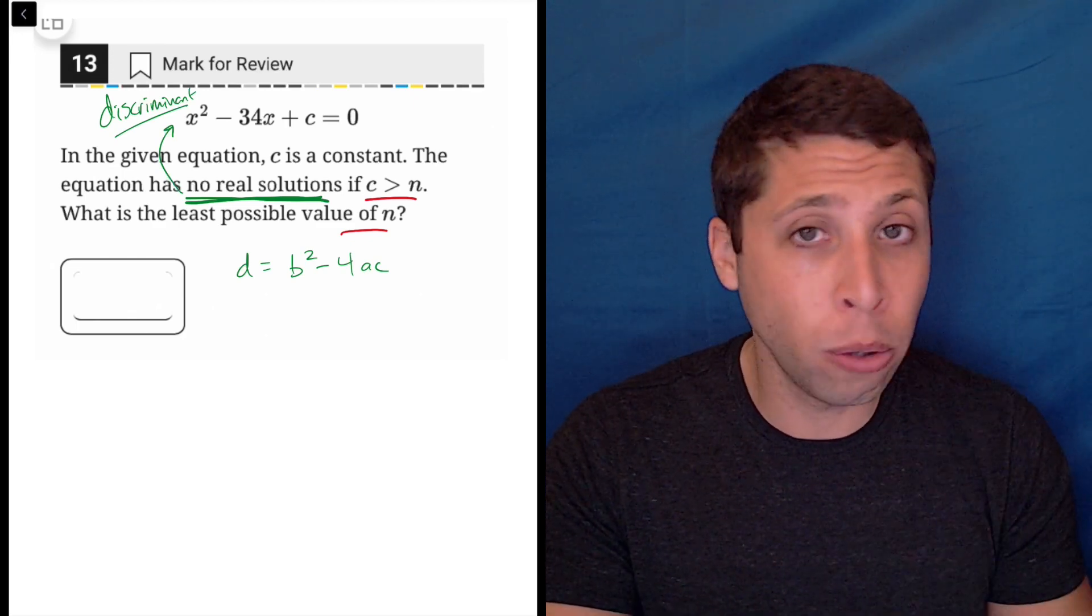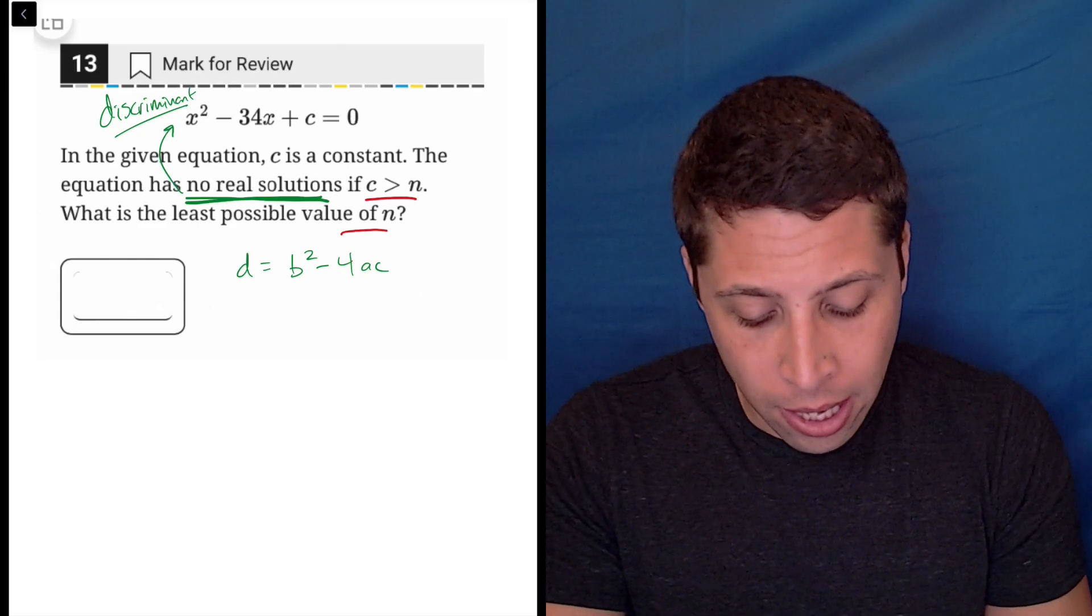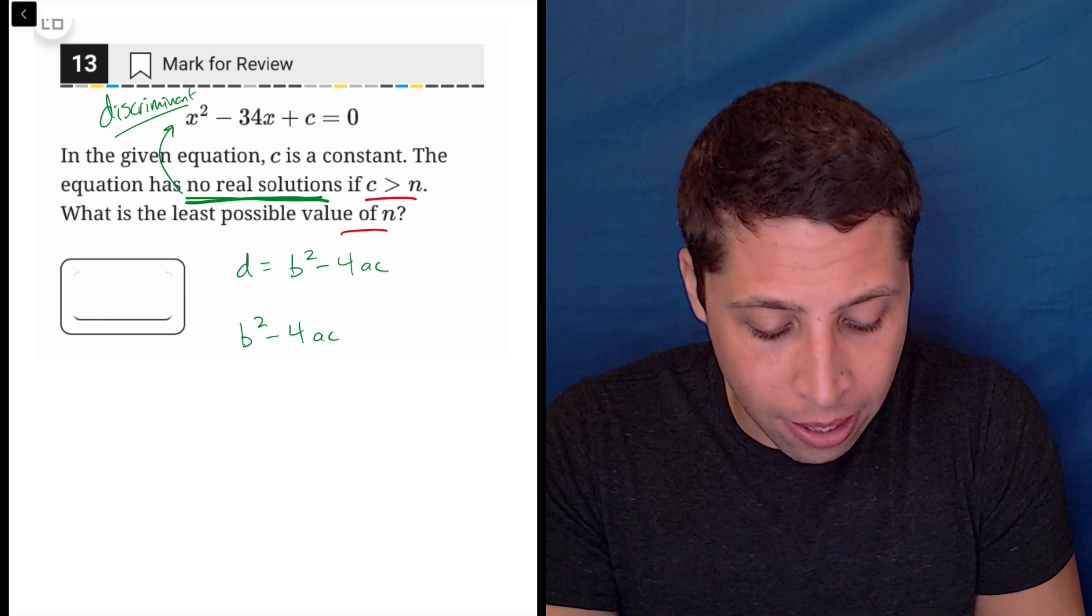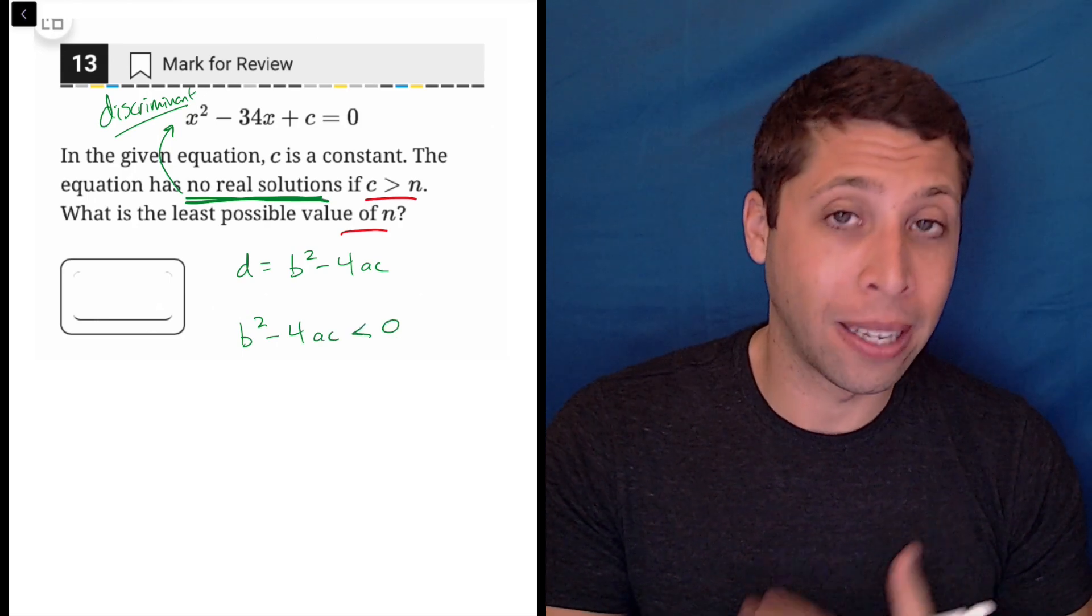Now if we wanted no solutions, then b squared minus 4ac is going to have to be less than zero. And again, if you think back to the quadratic formula, it makes sense why, right?